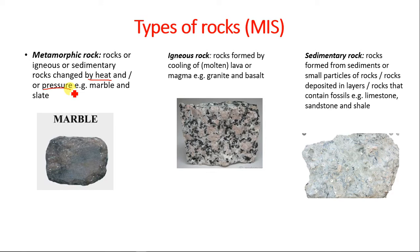This forms a different type of rock called metamorphic rock. Examples of metamorphic rocks are marble and slate. Igneous rocks are rocks formed by the cooling of molten magma that erupts from the earth's crust — examples are granite and basalt. Sedimentary rocks are formed from sediments or small particles of rocks that have been eroded and weathered, deposited in layers, and they contain fossils. Examples include limestone, sandstone, and shale.